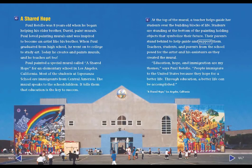The mural speaks to the school children. It tells them that education is the key to success. At the top of the mural, a teacher helps guide her students over the building blocks of life. Students are standing at the bottom of the painting, holding objects that symbolize their future. Their parents stand behind to help guide and support them. Teachers, students, and parents from the school posed for the artist and his assistants as they created the mural.